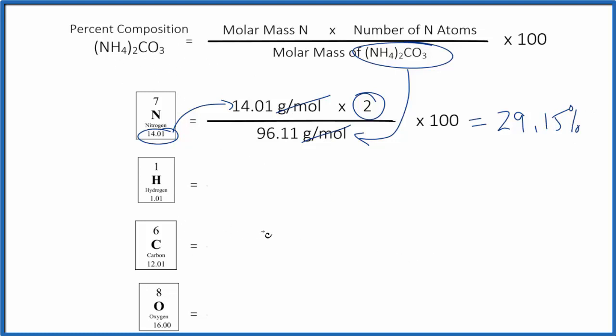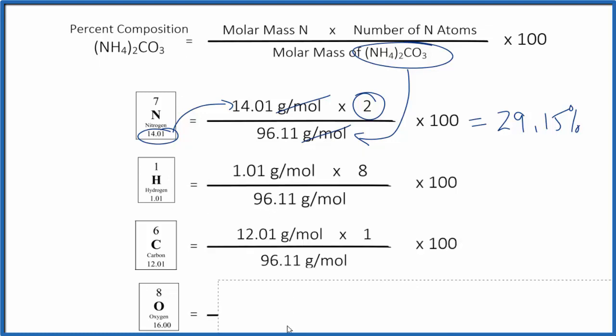For hydrogen and carbon, we do the same thing. The molar mass of the element we're interested in, times the number of that element, divided by the molar mass for the ammonium carbonate.